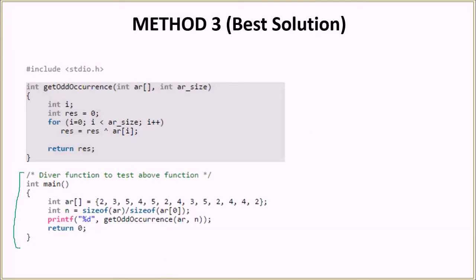So here we have the driver function. It has the array, the input array. We calculated the size and then we basically called getOddOccurrence, which has the array and the size. So let's go to getOddOccurrence. In this method, we are having the parameters, input parameters as array and its size. Then you have int i for the for loop. Then you have a result variable res, which you have initialized to zero.